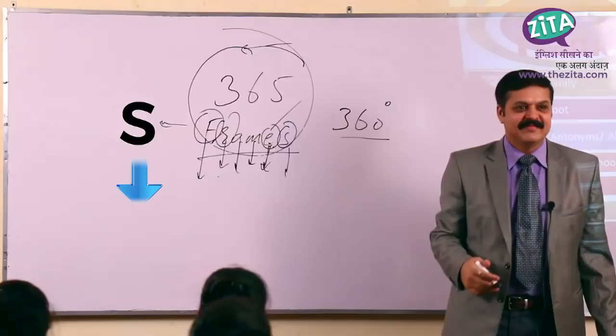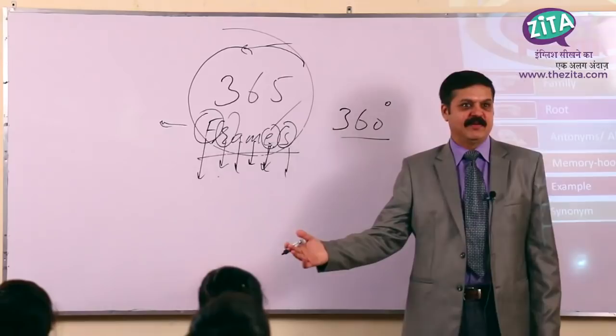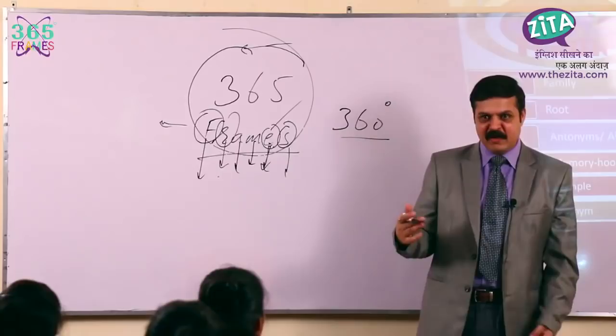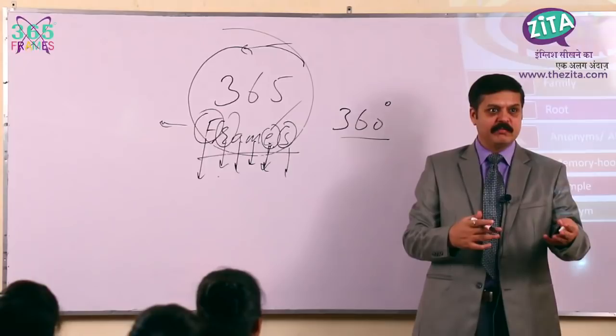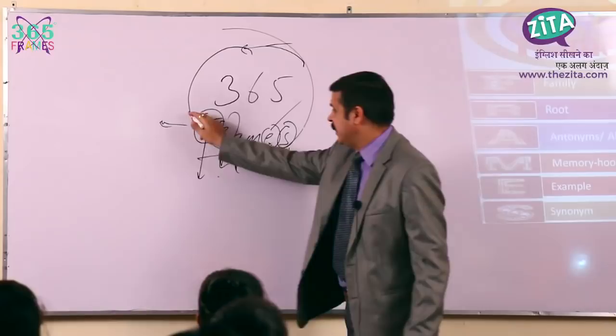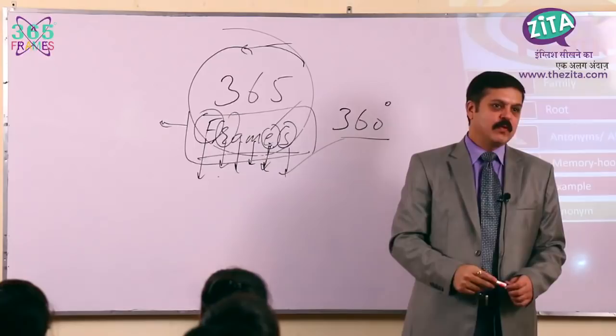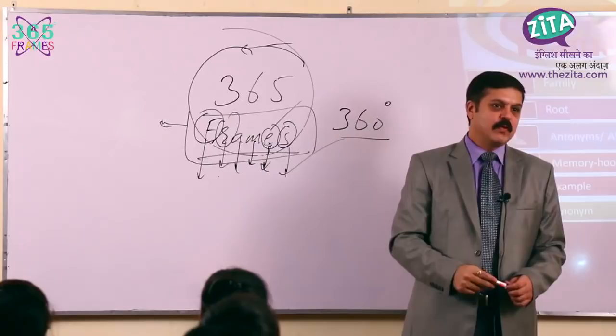And last but far from the least — S, that means synonyms. S means synonyms. Syn means same, nym means name. Synonyms — same name words. Antonyms — opposite name words. And you also know that pseudonym — aponym. So what in all makes it? Frames. We are going to learn words through frames, in frames, by the frames. Did you get the point?